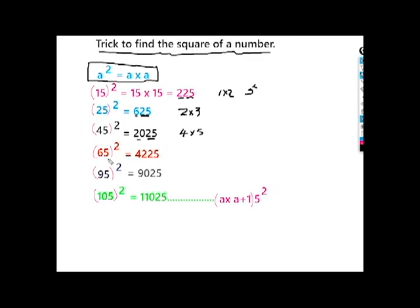65 squared: 5 squared is 25, 6 times 7 is 42, so 4225. 95 squared: 5 squared is 25, 9 times 10 is 90, so 9025.